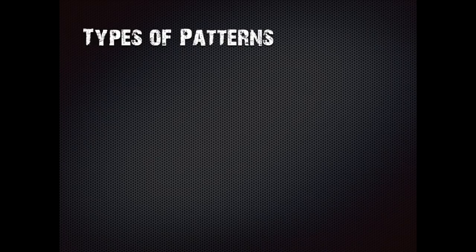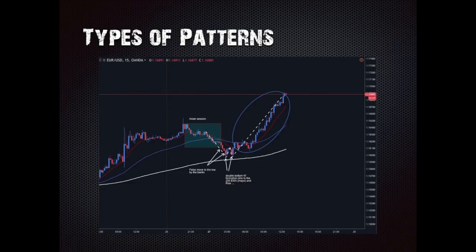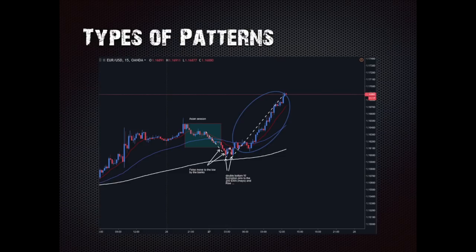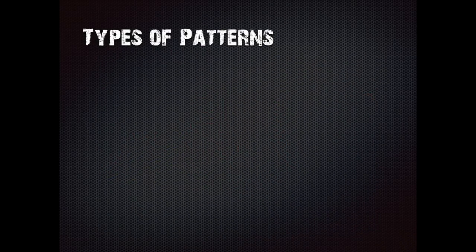Type 1 pattern: we're looking for a false move either past the low or the high of the Asian session. In this example, it's a false move past the Asian session low. The first leg comes up, market makers come back down and hit the same low again, then price rises — that makes a W. You'll also see the 200 EMA (mayo line) protecting the W. We call that 'pins to the mayo.'